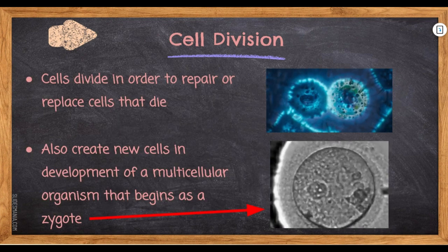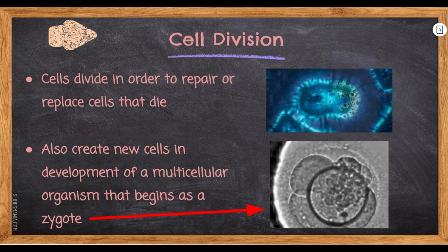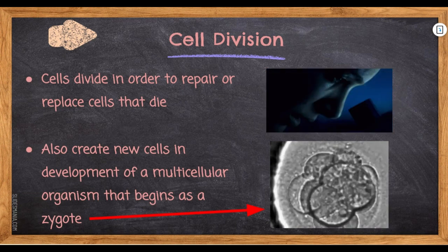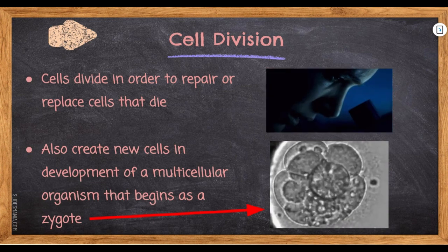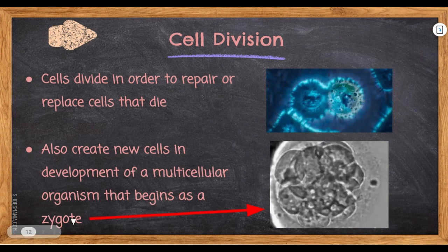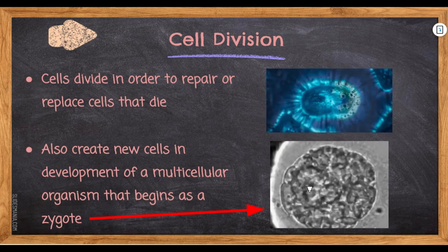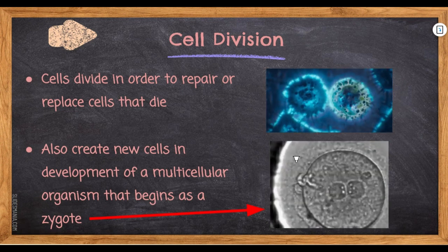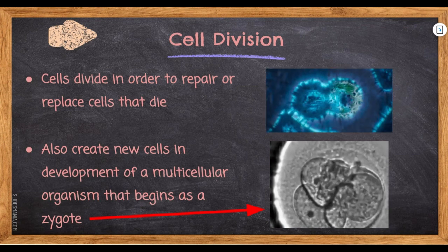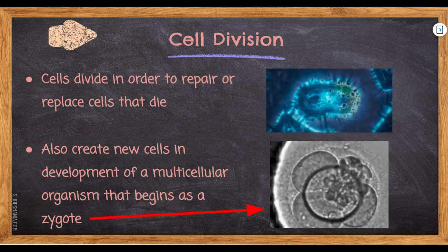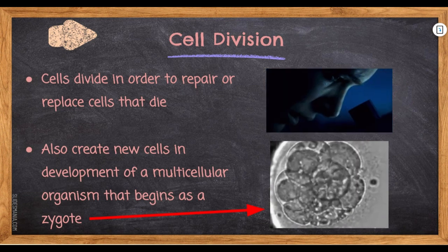Cell division: cells divide in order to repair or replace cells that die. This is just what happens throughout the cell's life cycle — it's born, it divides, and then it dies, creating new cells. It also supports development of a multicellular organism that begins as a zygote. A zygote is just a fertilized egg — whenever the sperm gets inside the egg, the egg starts to divide and turns into a baby. The cell goes from one cell to two, two to four, four to eight, and it just keeps dividing.